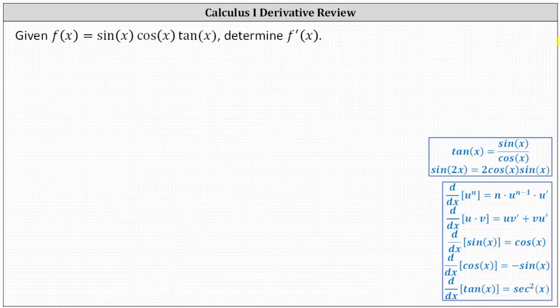Because f(x) is a product, we might think we should apply the product rule of differentiation, and we could, but whenever we have a product of trig functions, we should first see if we can simplify. Recall that tan(x) = sin(x)/cos(x), and therefore f(x) will simplify.